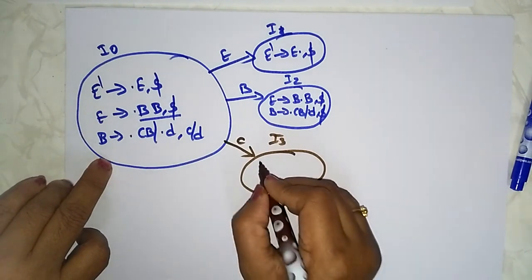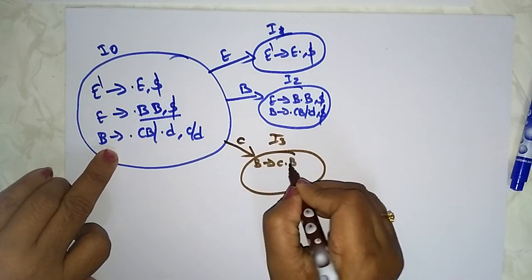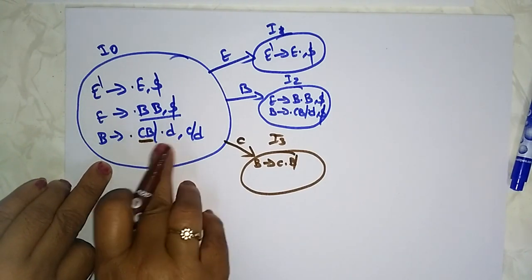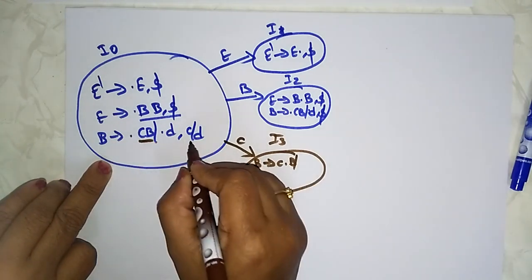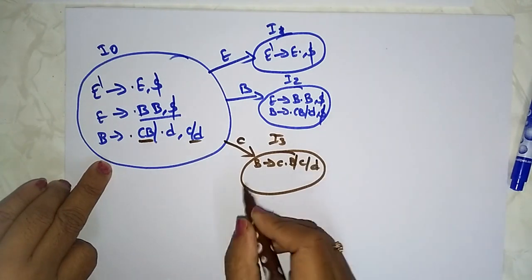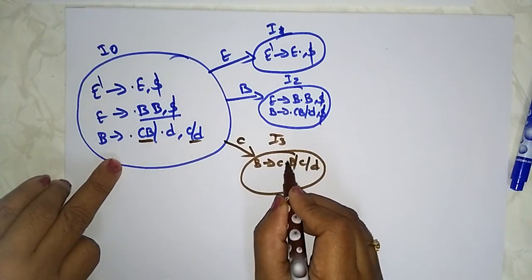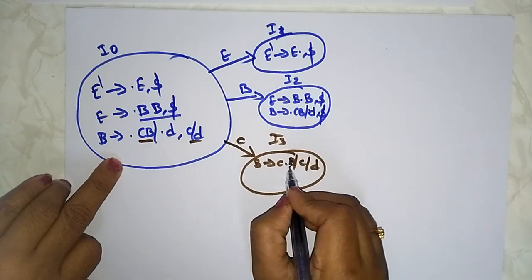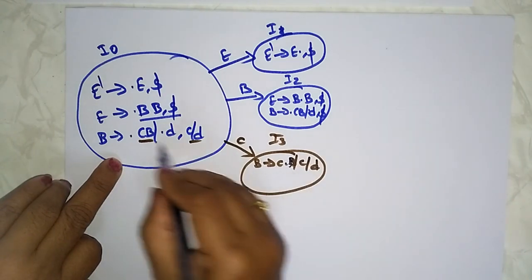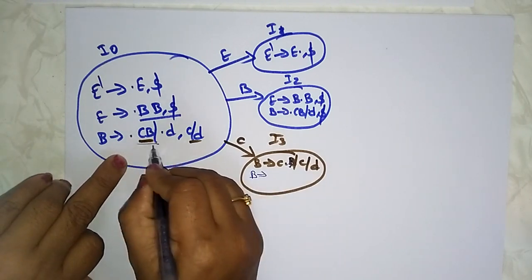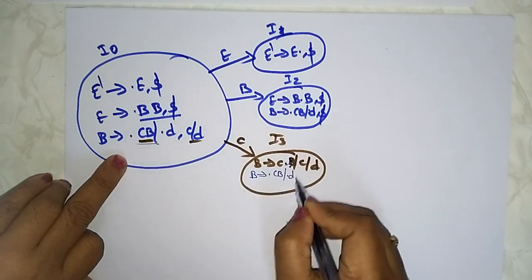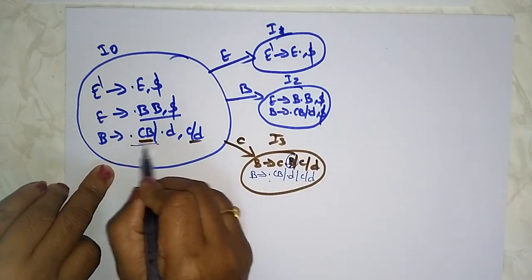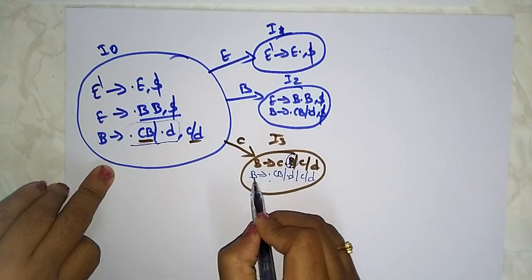I3 on 'c': B → C · B, with c/d as lookahead. After the dot there is a non-terminal B, so for whatever productions are present for B, you write them and copy the lookahead. The complete productions for B are: B → · CB and B → · B. Copy the lookahead value for all of these.